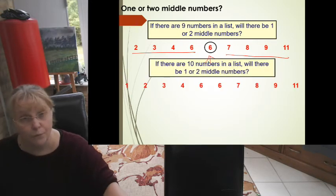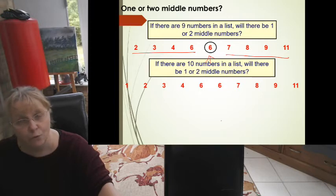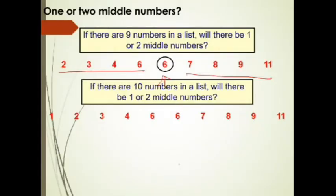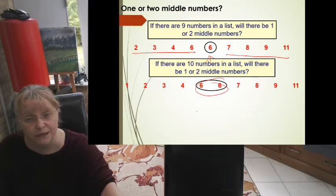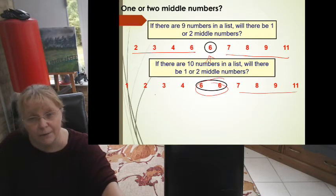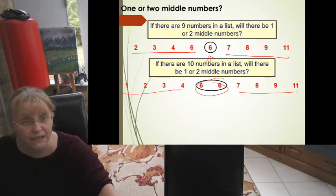So an odd number will always give the nice median in the middle, whereas an even number, so ten, would that give you one or two middle numbers? And hopefully you've decided it would give you two middle numbers, because that's the only way to give you two even sets on either side.